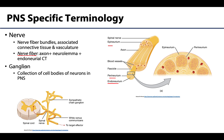A ganglion is similar to the nucleus of the CNS and is a collection of cell bodies specific to the PNS. So the ganglion is PNS and a nucleus is CNS. We will see some of these ganglia associated with the sympathetic trunk outside of the spinal cord, and we'll get into these more when we get into the autonomic nervous system.